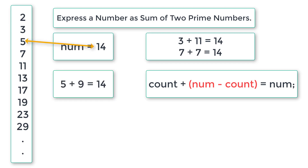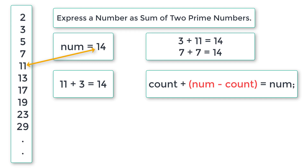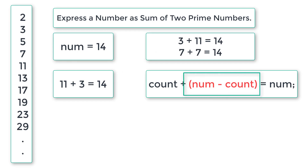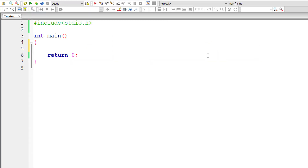Next, count increments to 5; 14 minus 5 is 9, but 9 is not prime so this pair is skipped. Count becomes 7; 14 minus 7 is 7, and 7 plus 7 — 7 is prime, so this is another result. When count is 11, 14 minus 11 is 3, giving 11 plus 3, which we already have as 3 plus 11 — so there's no point repeating it. The for loop stops when count is less than or equal to num minus count. Keep this logic in mind.